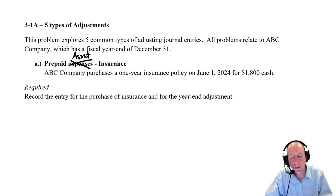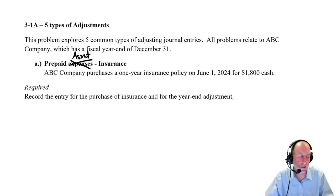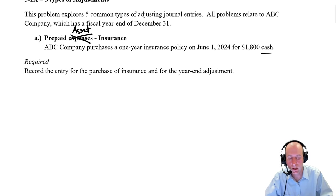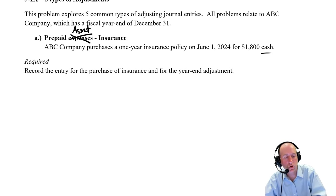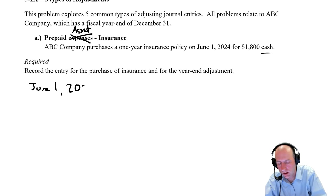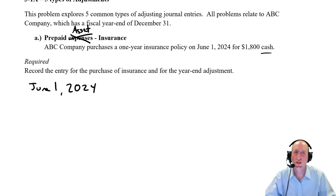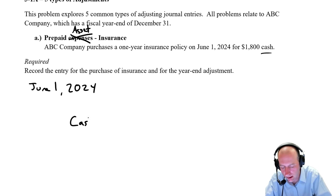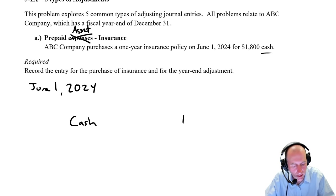ABC Company purchases a one-year insurance policy on June 1st, 2024 for $1,800 cash. We need to record the entry for the purchase and the year-end adjustment. On June 1st, 2024, cash is decreasing so we credit cash for $1,800. The debit here — normally when you pay a cost you'd debit an expense — but since insurance is bought in advance and used over time, we debit the asset account called prepaid insurance.